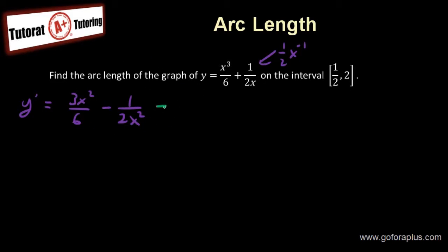So if you simplify this a little bit, this is going to be 1 over 2x squared minus 1 over x squared. Because 3 over 6 is 1 half, so I just factor out the 1 half.